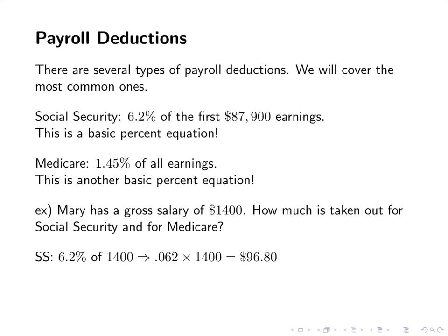Remember that the answers here are money, so make sure you have two decimal places. If it's more than two decimal places, make sure you round. If it's less, make sure you add in the additional zero. So you wouldn't write it as 96.8 — it's 96.80 because it's money.